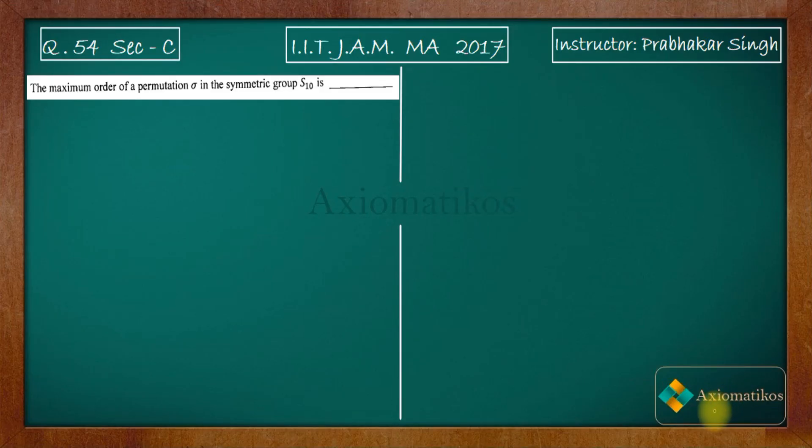Hello dear students, welcome to Axiomatics course. This video is part of the solution series for IIT JAM 2017, and we are doing problem 54 of section C. This problem is from abstract algebra and is asking us the maximum order of a permutation sigma in the symmetric group S_n.